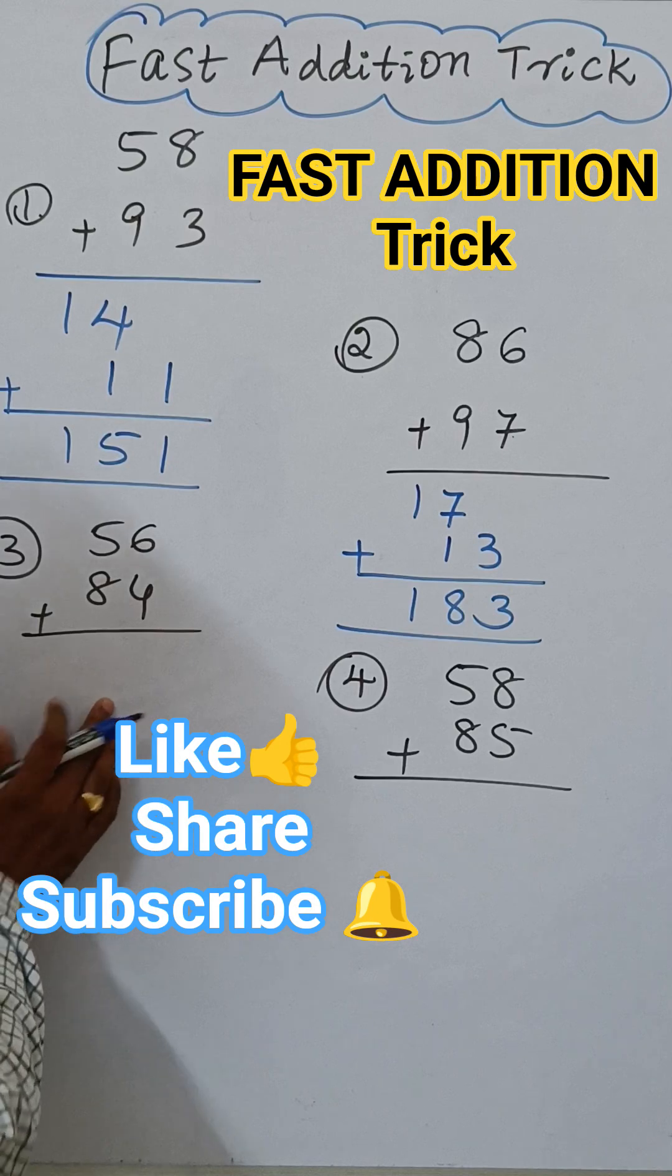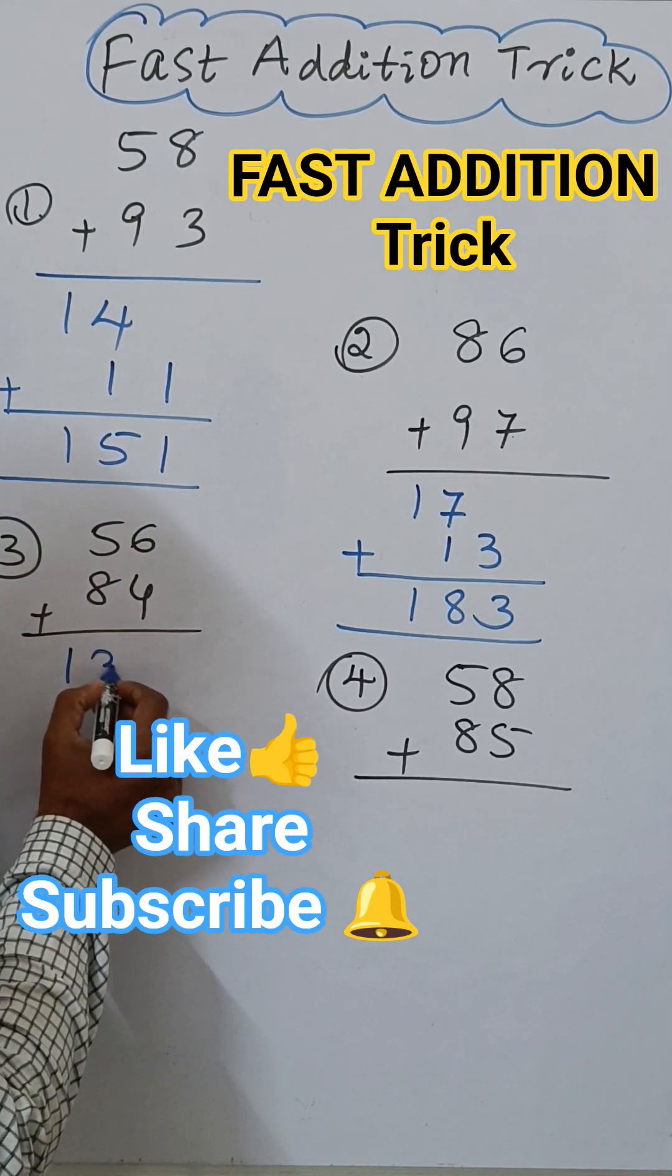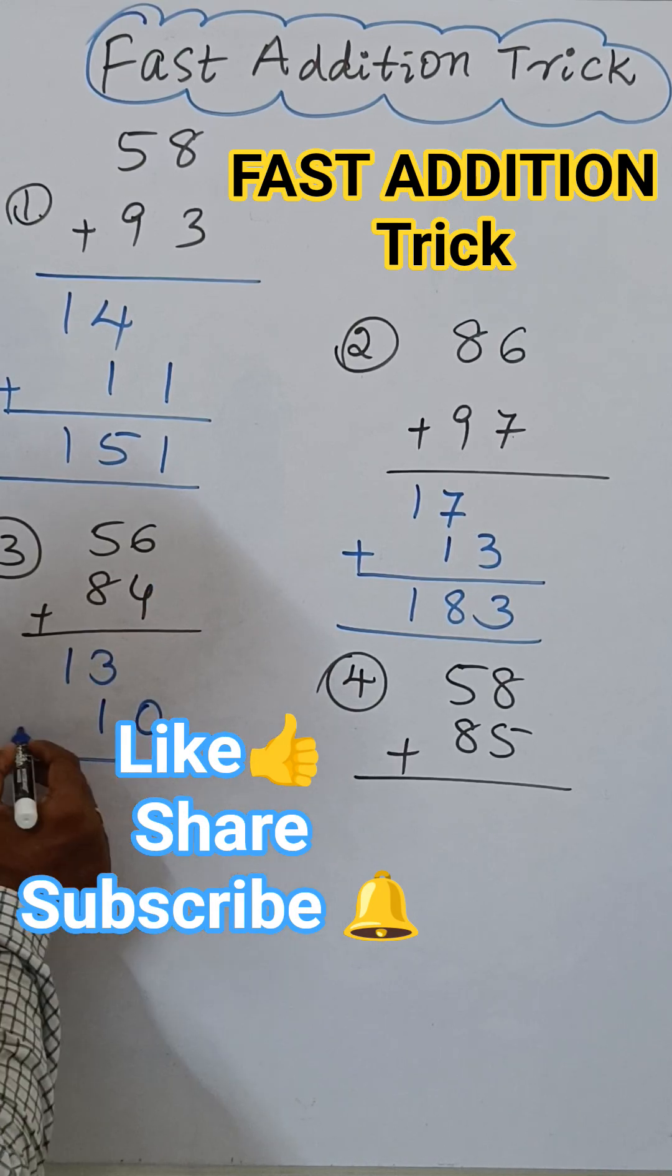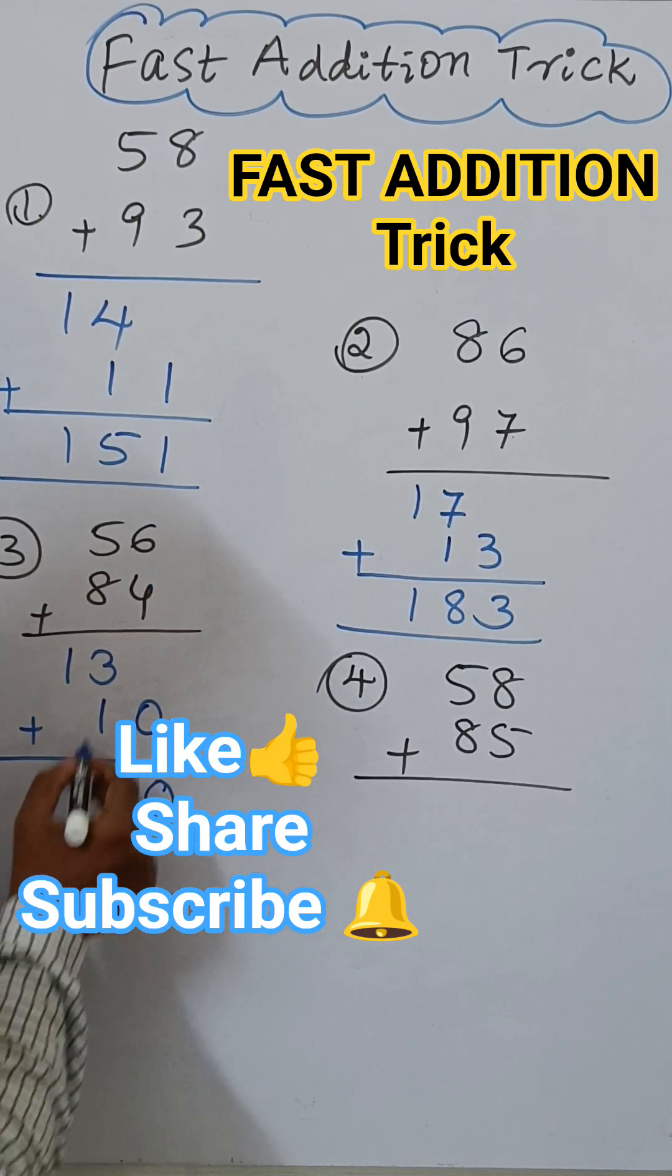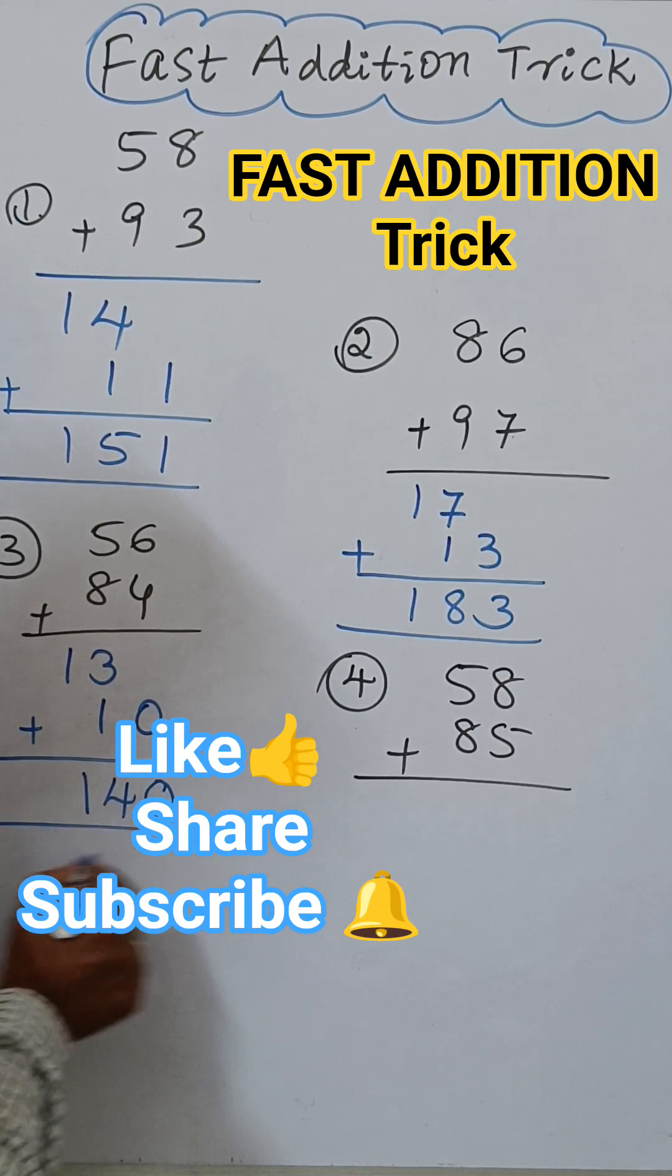See this one. 5 plus 8, 13. 6 plus 4, 10. And then add, this is 0. 3 plus 1, 4. Here, 1. This is our answer.